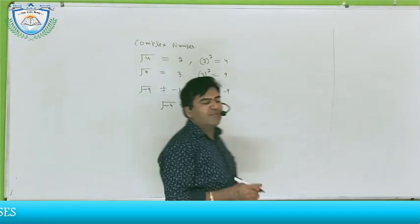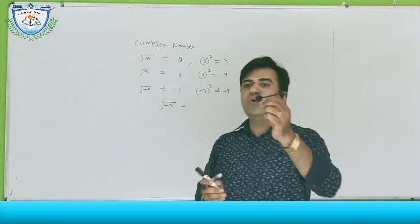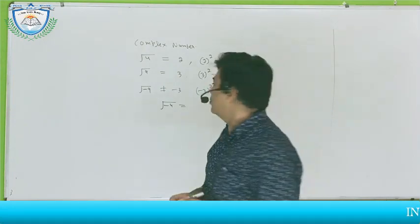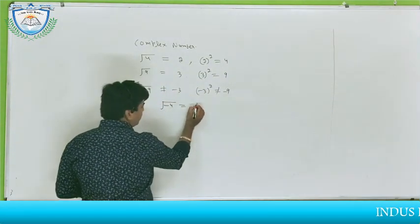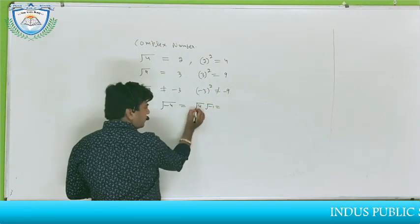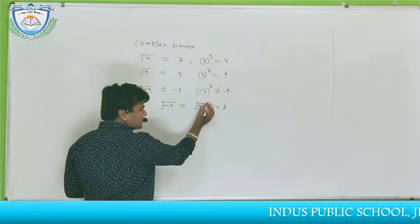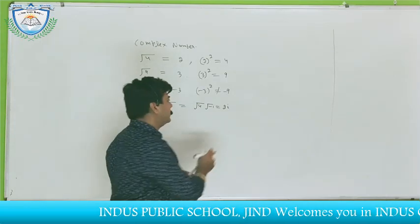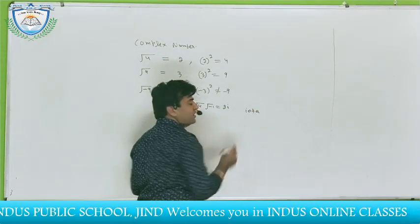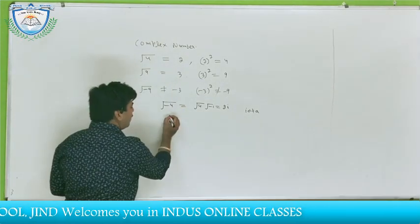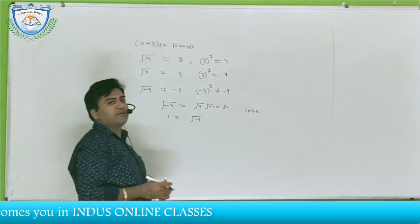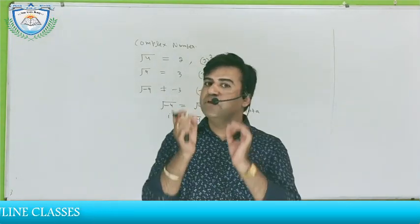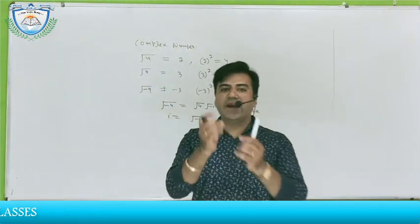You have to find the square root of minus 4. You all know that square root of 4 equals 2. So square root of minus 4 is written as root 4 times root minus 1, which equals 2 times root minus 1. This number is an imaginary number, and root minus 1 is called iota. So the value of iota equals root minus 1.